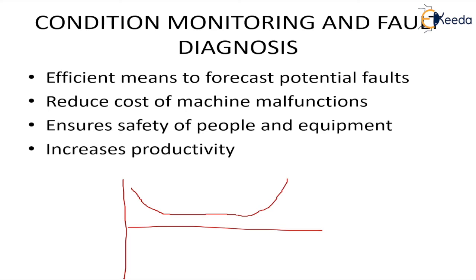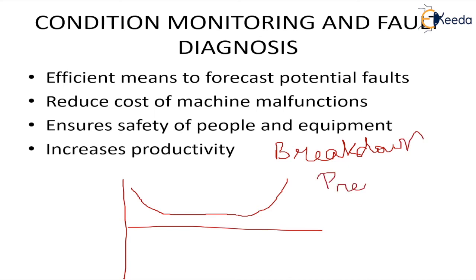We need to maintain and monitor the machine. There are basically three ways of maintenance: the first is breakdown maintenance, the second is preventive maintenance, and the third is conditioning or condition-based maintenance.